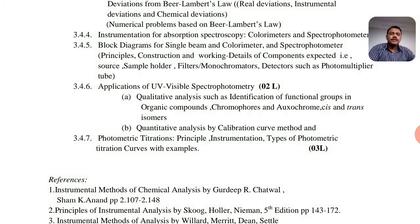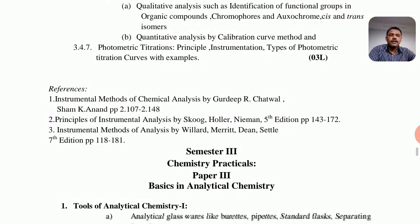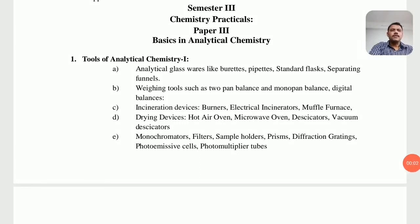This is the basic syllabus for analytical chemistry, semester 3, paper 3. The practicals for analytical chemistry semester 3 are as follows. The first practical covers the analytical tools used in analytical chemistry: analytical glassware such as burettes, pipettes, standard flasks, and separating funnels; weighing tools such as digital and two-pan balances; muffled furnace; burners; drying devices such as hot air oven, microwave oven, desiccators, and vacuum desiccators; and monochromators, filters, sample holders, prisms, diffraction gratings, photo-emissive cells, and photomultiplier tubes. Students should know the write-up, uses, maintenance, and care of these items.